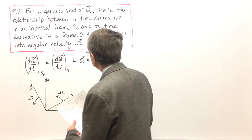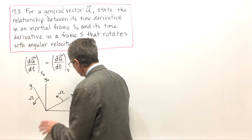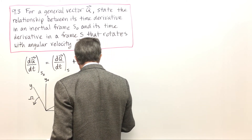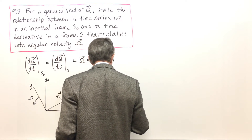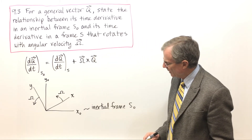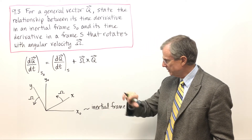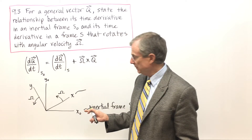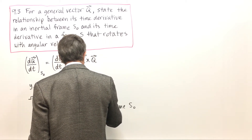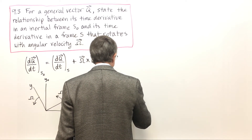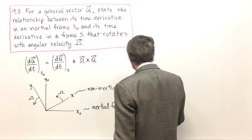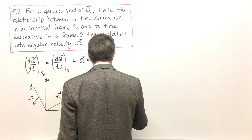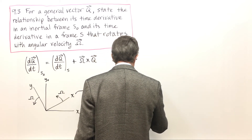So: dQ/dt as measured — let's first consider the coordinate system. x0 and y0 form an inertial frame S0, and there will be a z coming out of the board, where x0 crossed into y0 equals z0. Then there is a frame x, y, z that is non-inertial — rotating with angular velocity omega.